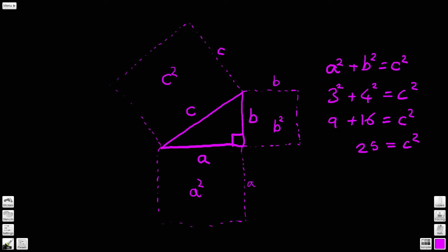Now if we want to find c by itself, we need to perform the opposite function of squaring, and the opposite function of squaring is to square root the value. So what we can say is